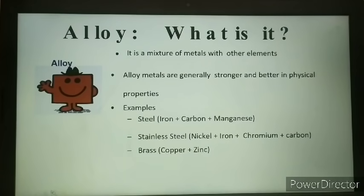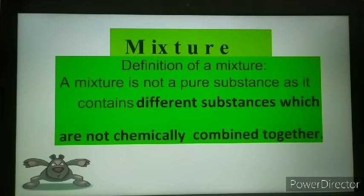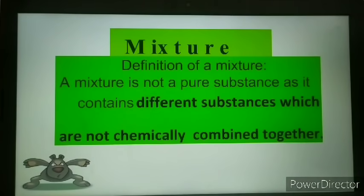So what is a mixture? A mixture is not a pure substance, as it contains different substances which are not chemically combined together. A mixture consists of molecules of two or more substances — that is, elements and compounds, or both — in any proportion. There is no definite proportion in the case of mixtures, and the constituents do not undergo any chemical change. They remain what they are.